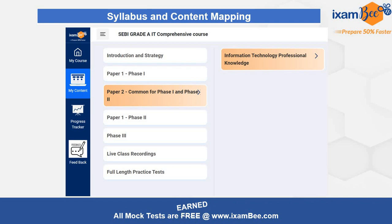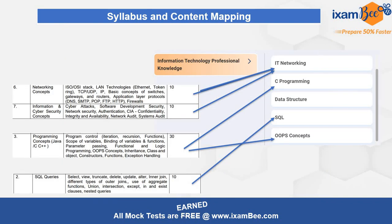Once you click on Paper 2 common for Phase 1 and Phase 2, you will get the option 'Information Technology Professional Knowledge.' If you click under that, you will get different sub-chapters like IT networking, C programming, data structure, SQL, and OOPs. I am now going to map the content on the left-hand side to the right-hand side, which is our content. From the SEBI syllabus screenshot, you can see exactly what they ask and where we are going to cover it all.